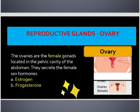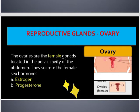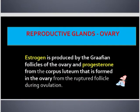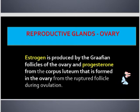Ovary — the ovaries are the female gonads, located in the pelvic cavity of the abdomen. They secrete the female sex hormones estrogen and progesterone.